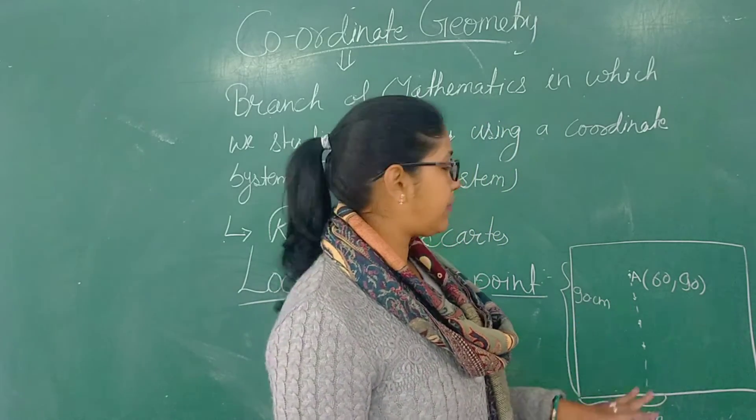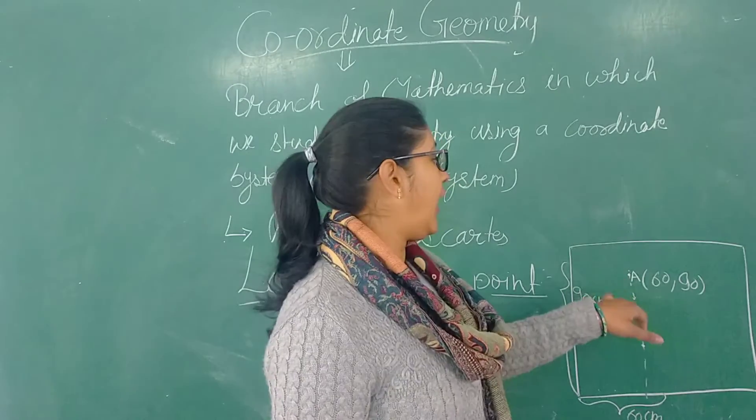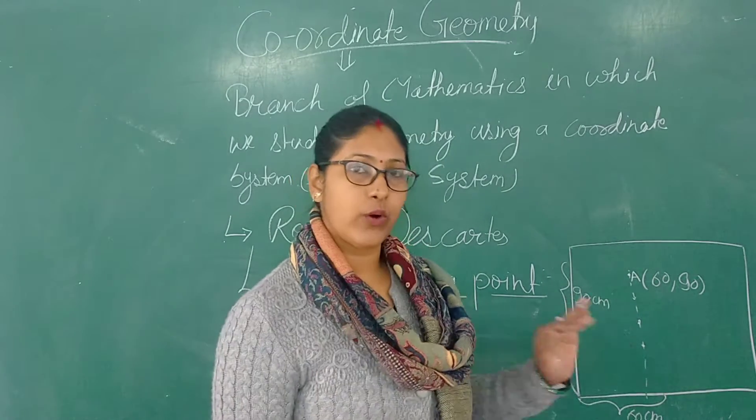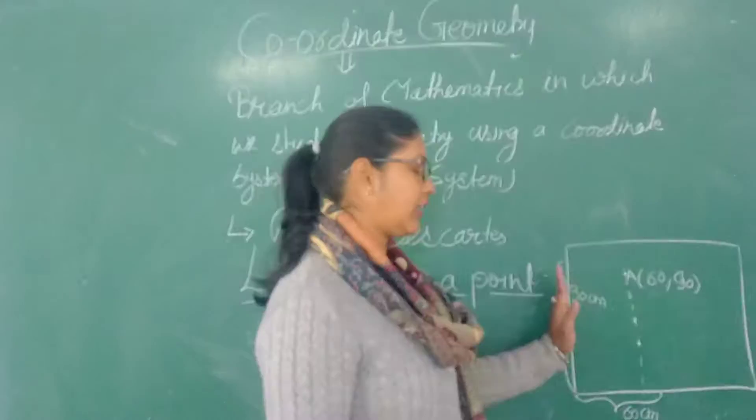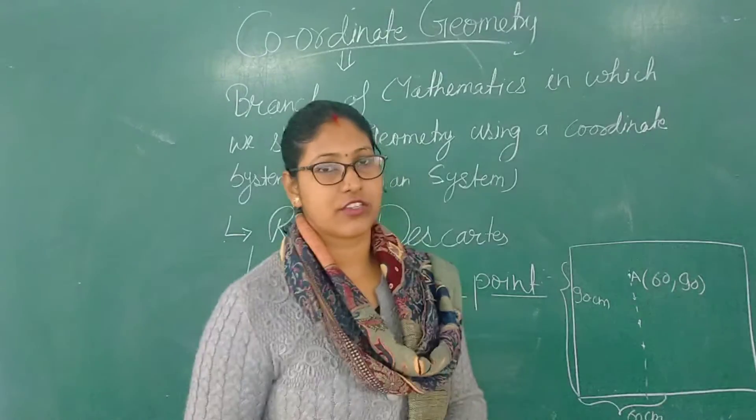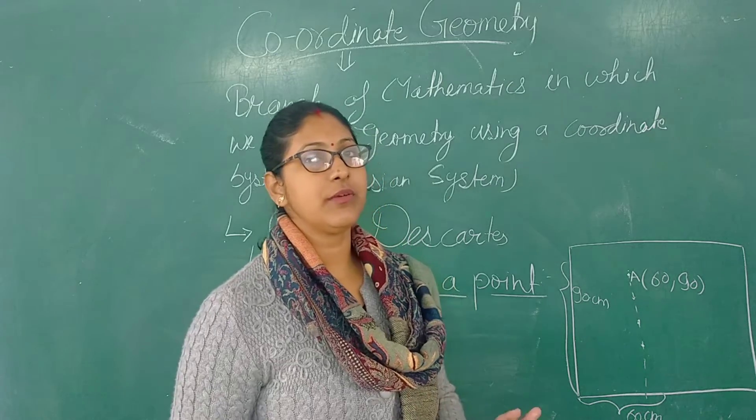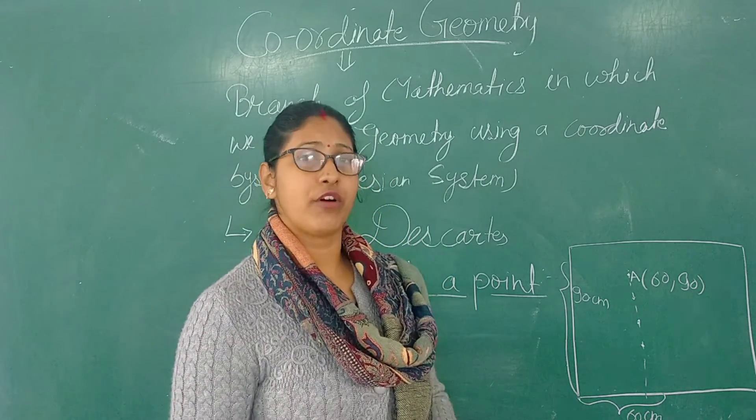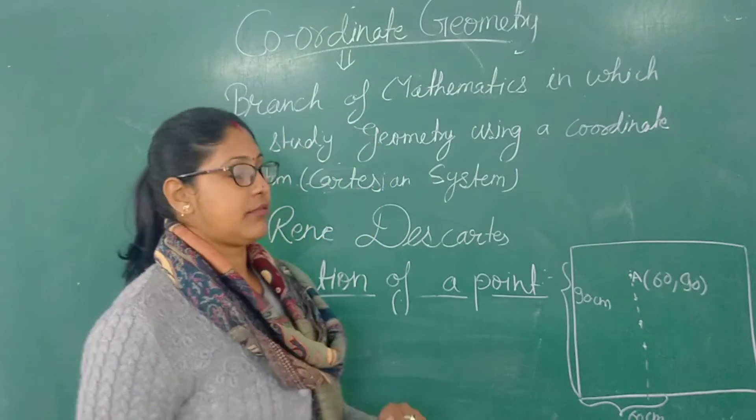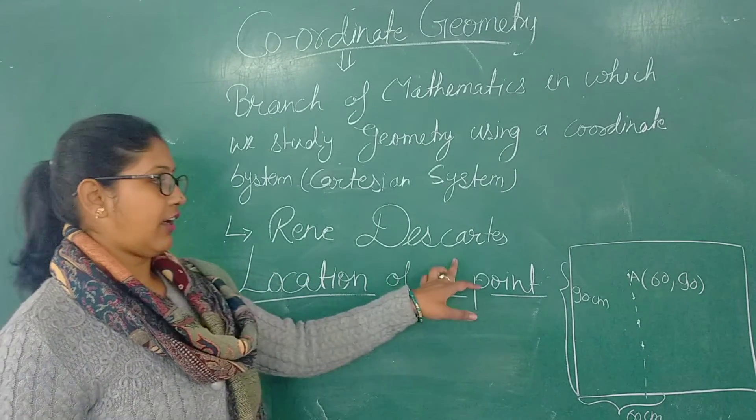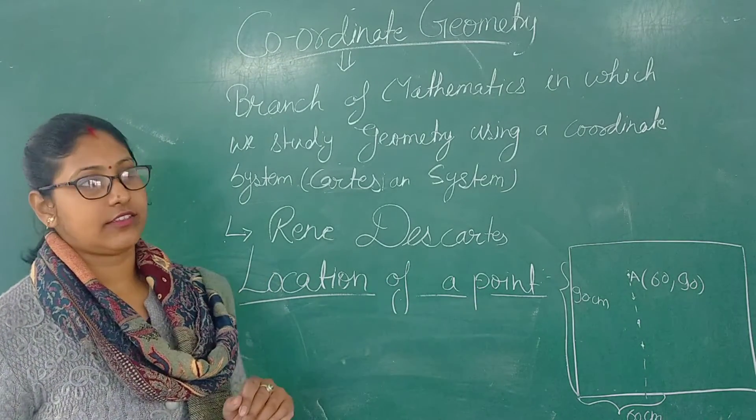So now when we represent any point with the help of two numbers, one is horizontal and one is vertical, then this type of system is called coordinate system. Since this system was invented or founded by the great mathematician René Descartes, we also call it Cartesian system.